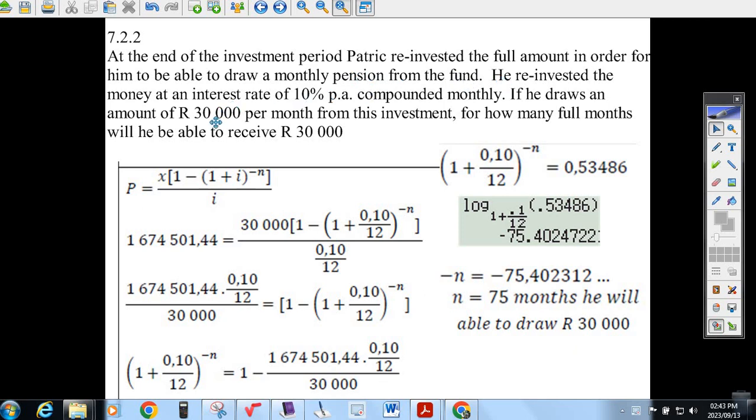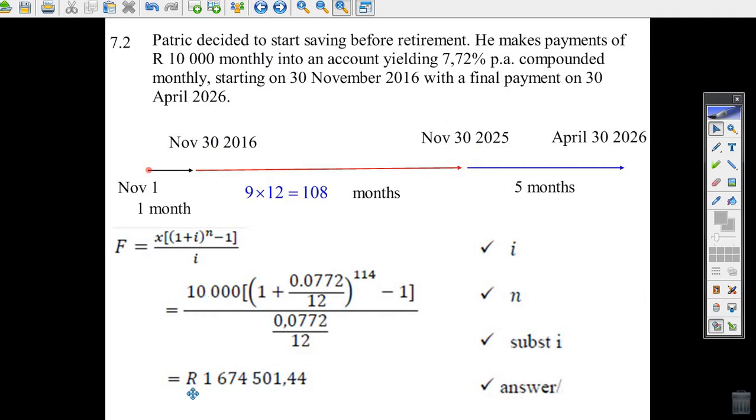He's going to withdraw 30,000 rand a month at 10% per annum. And the question is, how many full months will he be able to receive 30,000? So what you do, you take your answer from the last question. You might have a little bit of a different answer there.